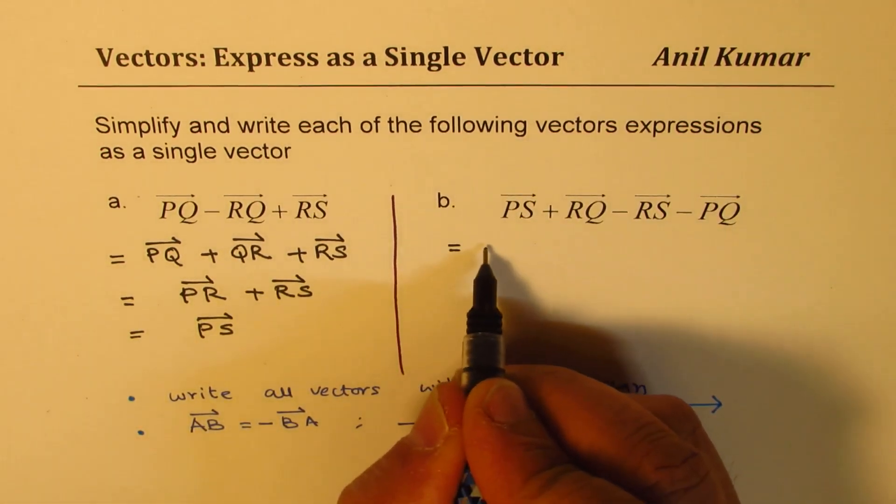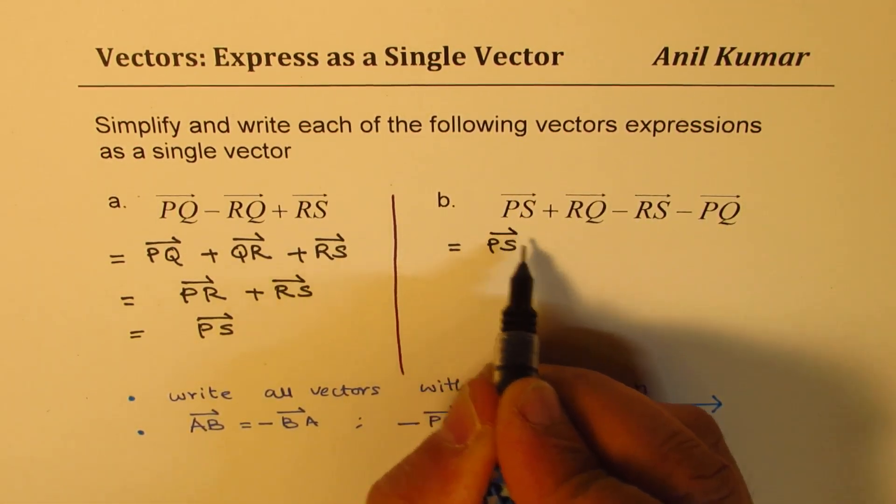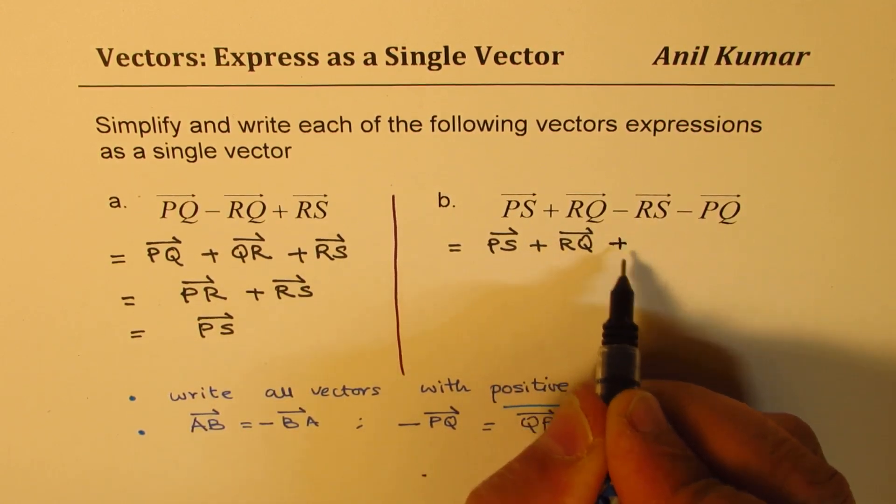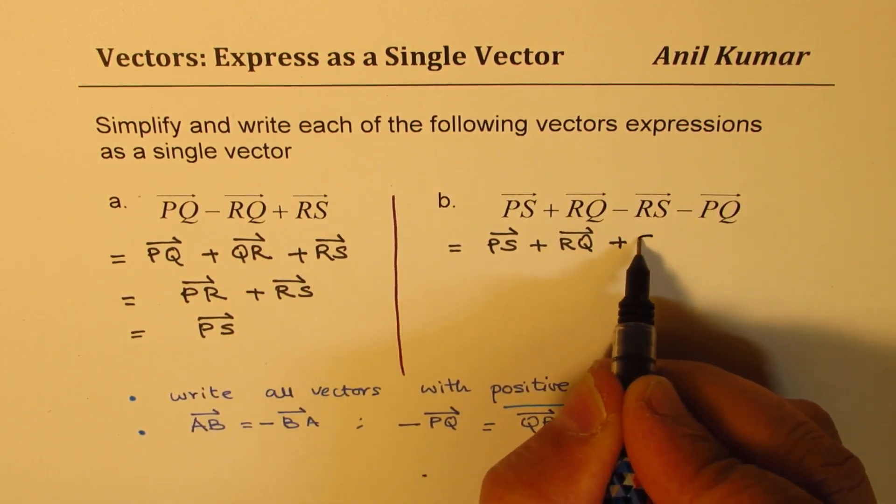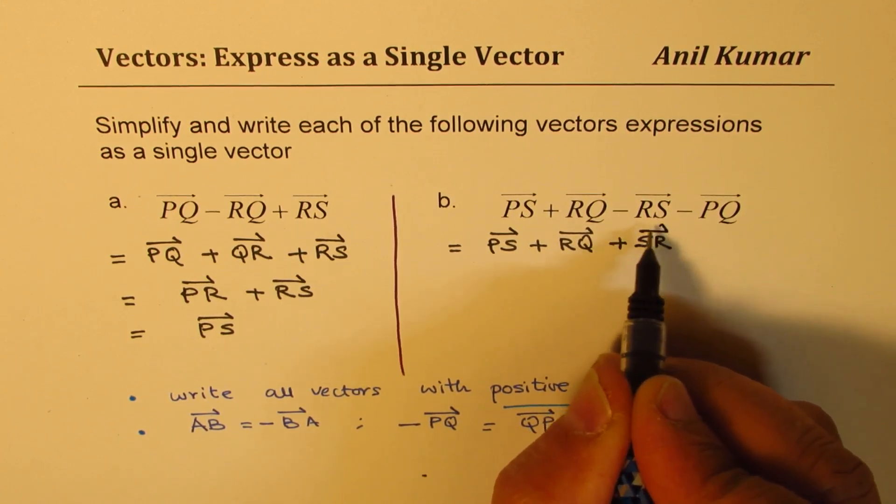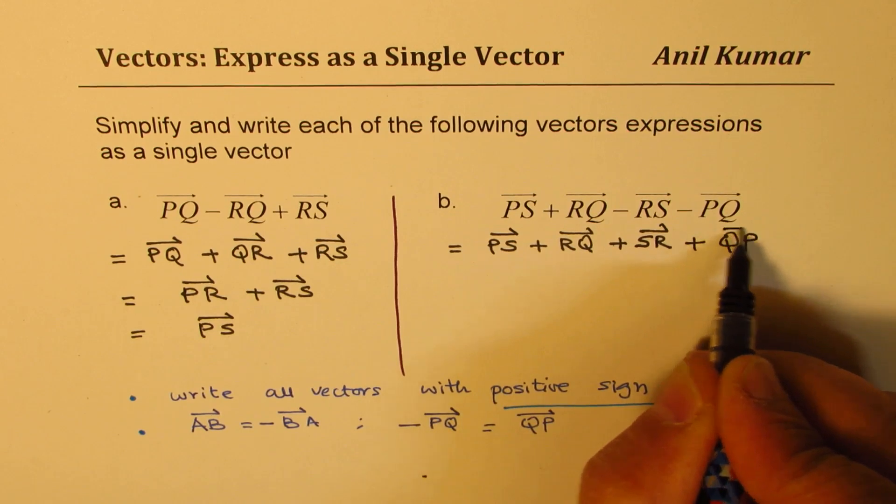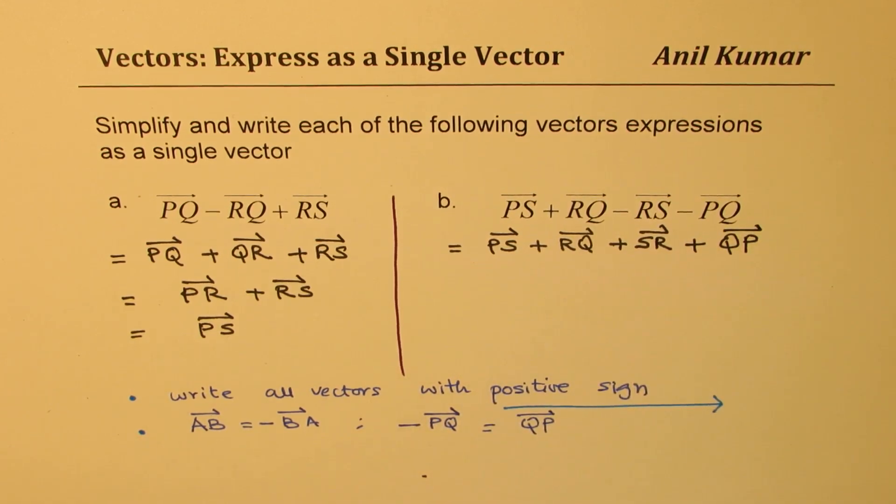So we'll write this as vector PS plus RQ plus, since I changed the sign, I'll have to write it in the reverse direction, S to R plus Q to P. Perfect. So that is my first step.